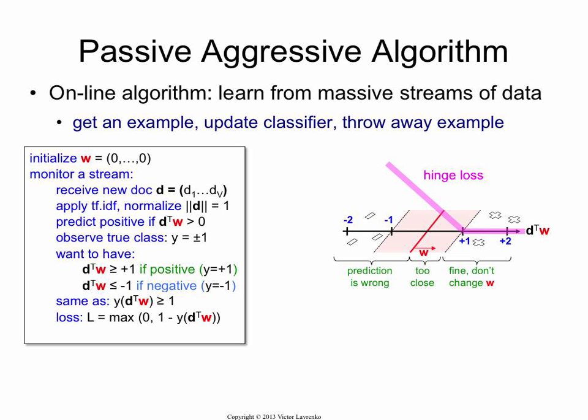If you try to draw it, that's what it kind of looks like. So if you land on this side of the boundary, then d transpose w, for a positive example, would be bigger than 1. So you want to have a loss of 0. You don't want to have a negative loss in that case.